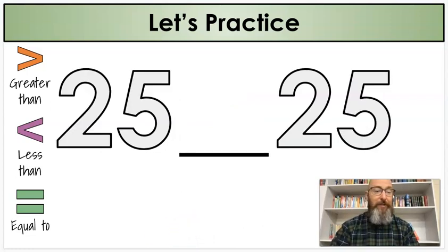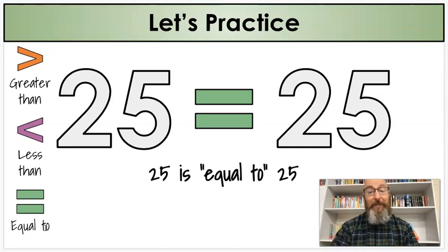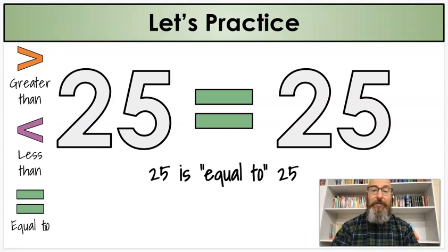Two more numbers: twenty-five and twenty-five. Is twenty-five greater than twenty-five, less than twenty-five, or equal to twenty-five? Equal is correct. Twenty-five is equal to twenty-five.